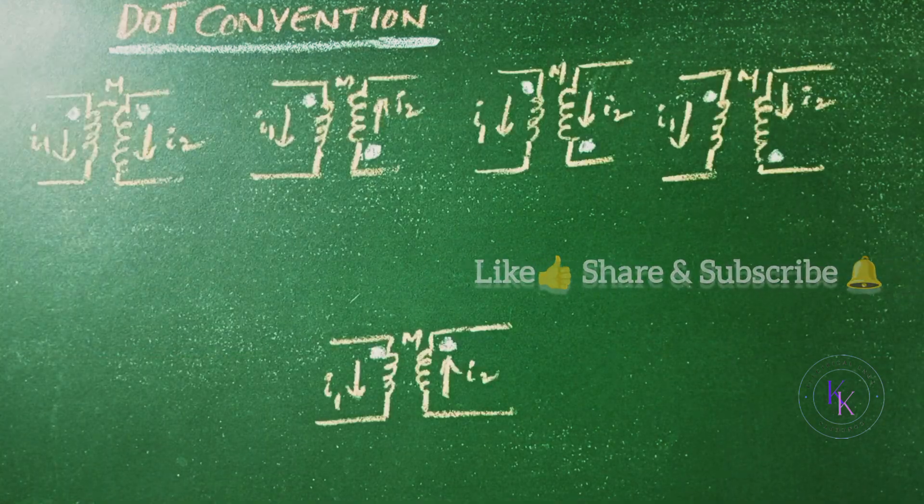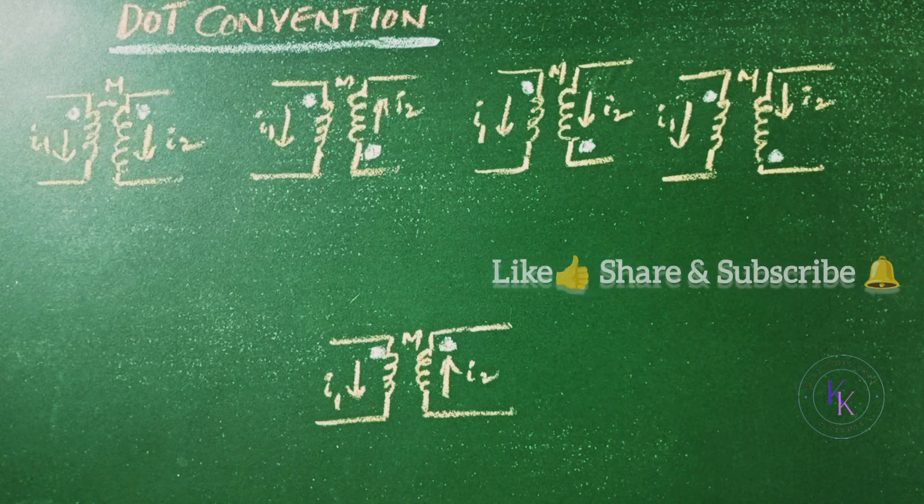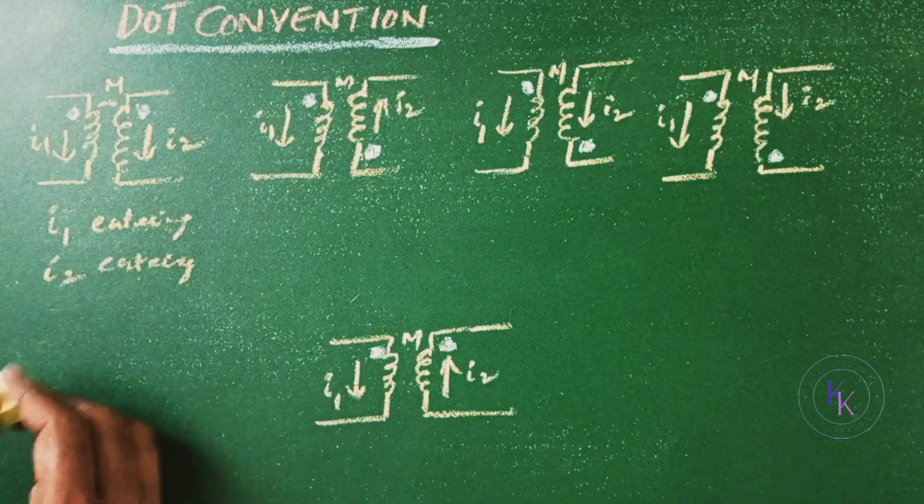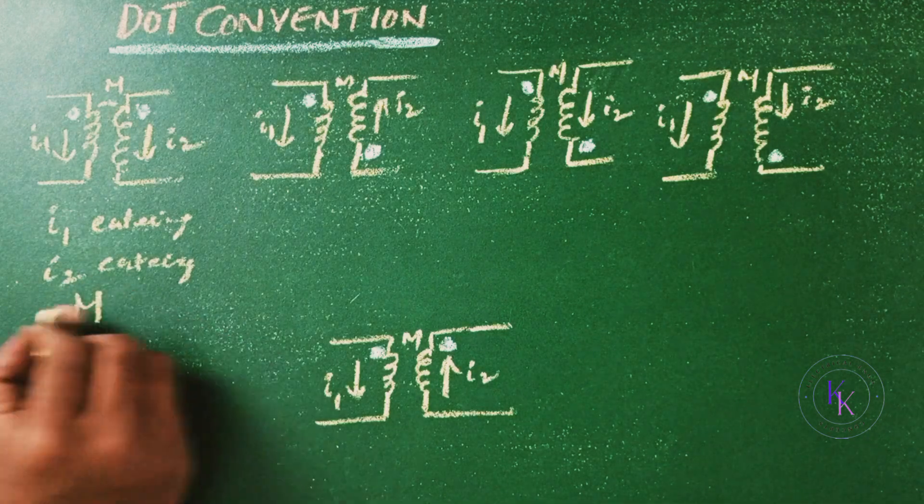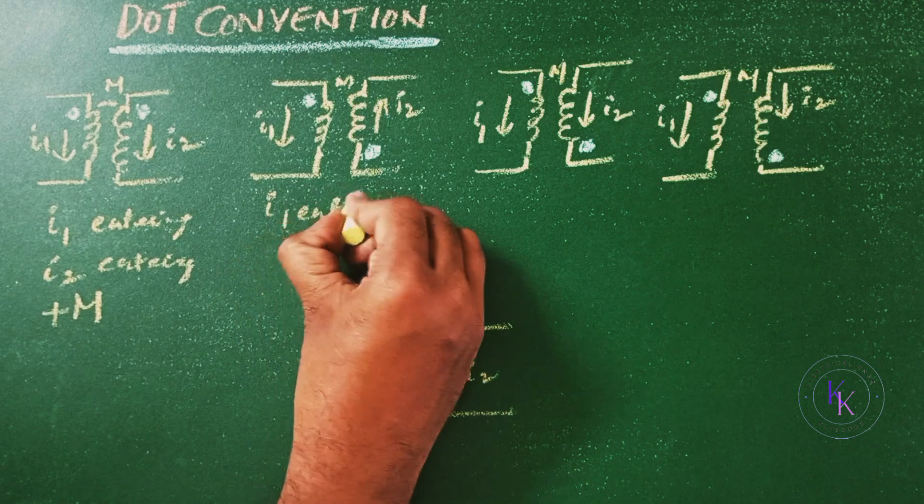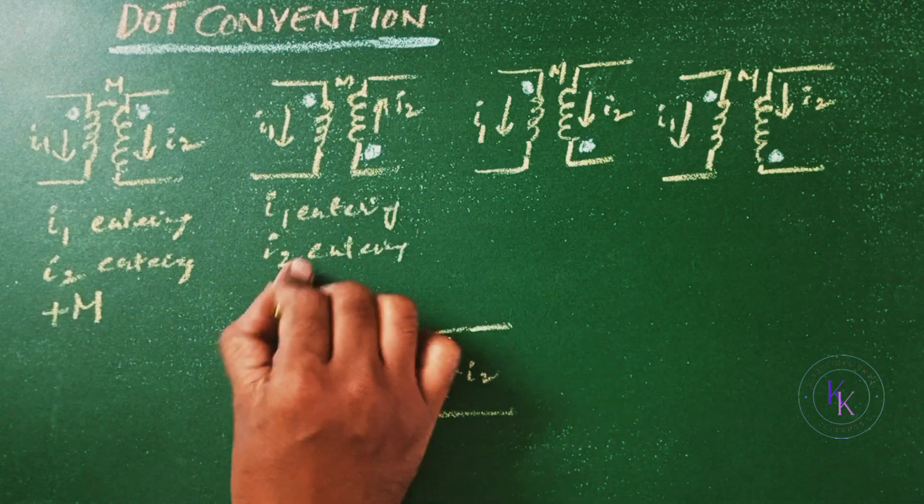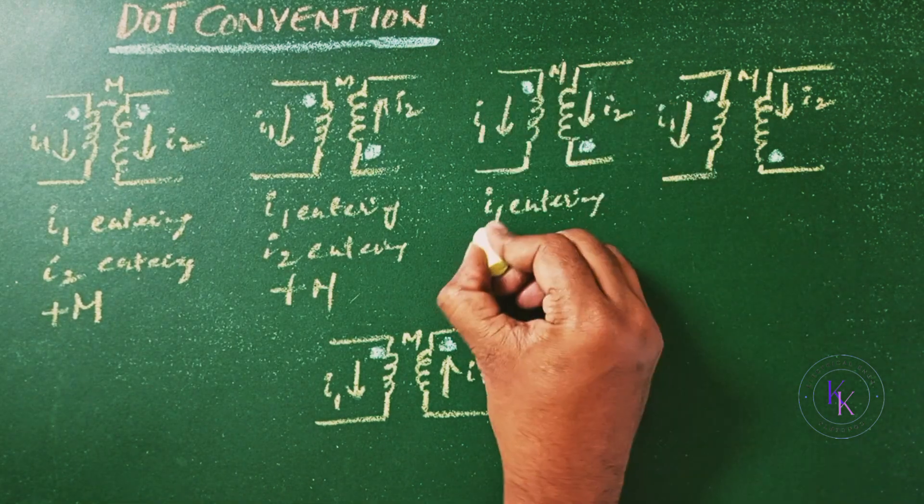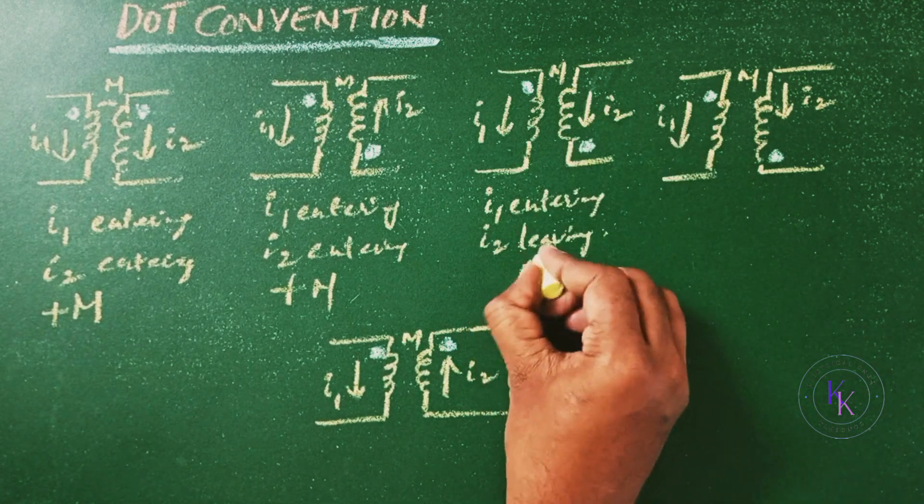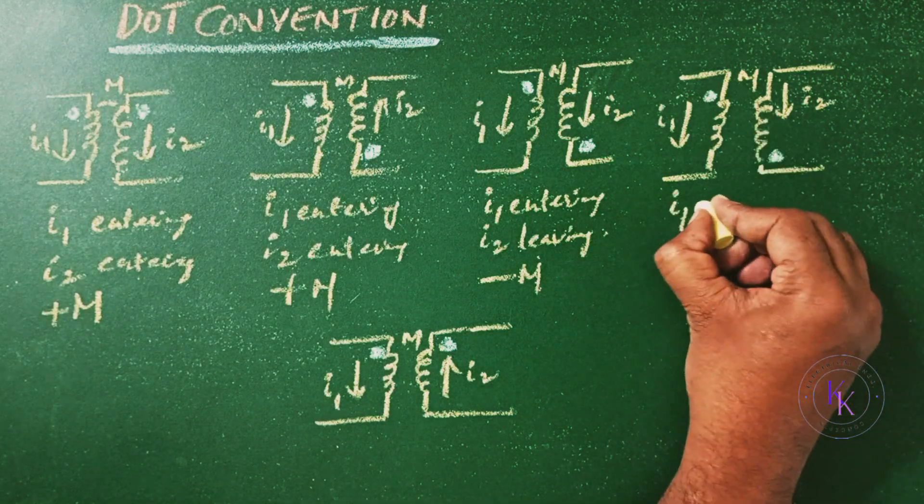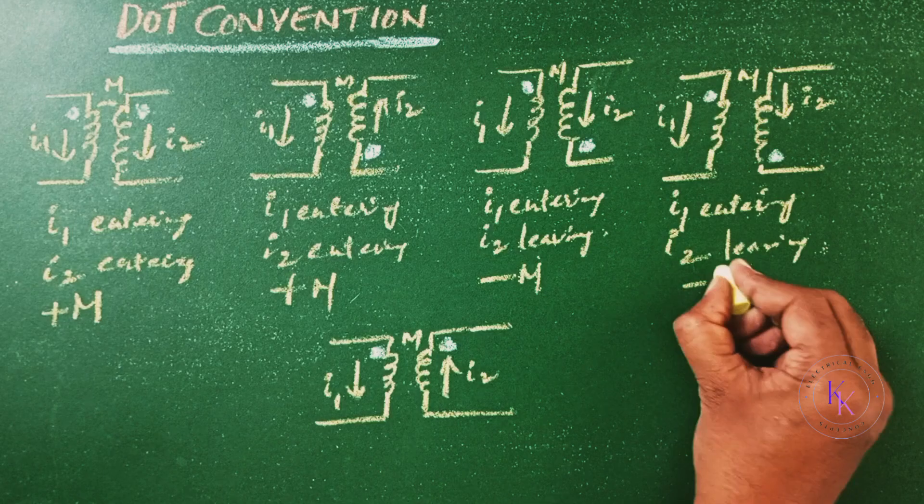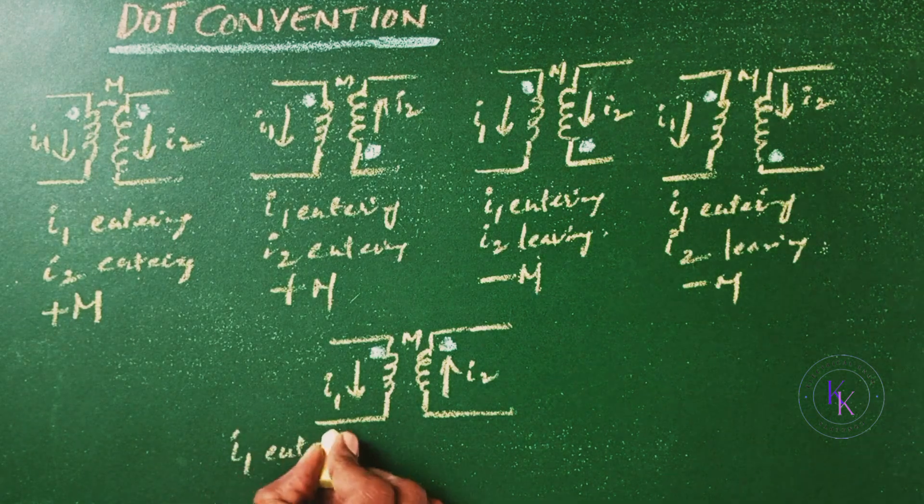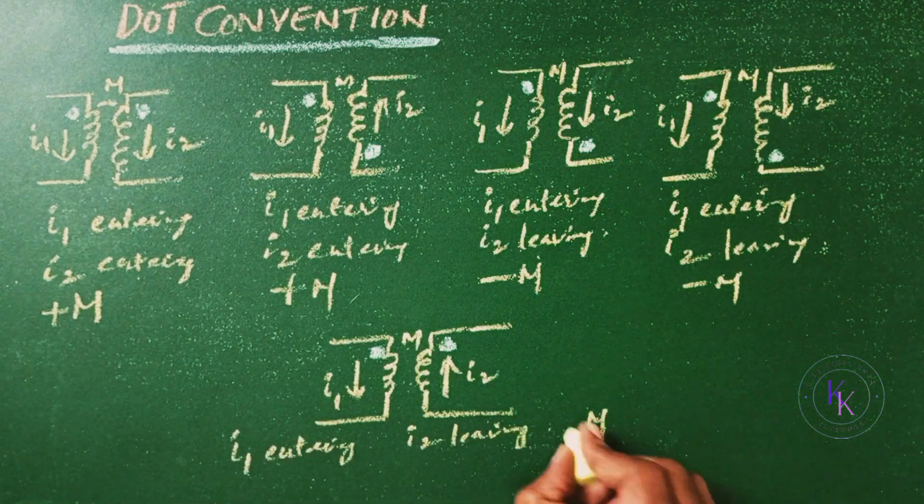The dot convention of few possibilities of mutually coupled transformer coils are shown here. In the first one the current I1 is entering, I2 is also entering, so both are going from the dots, so the mutual inductance M is positive. Here I1 entering, I2 also entering, the mutual inductance M is positive. Here I1 entering from the dot, I2 is leaving from the dot, so mutual inductance is negative. Here I1 entering, I2 leaving, the mutual inductance M is negative.